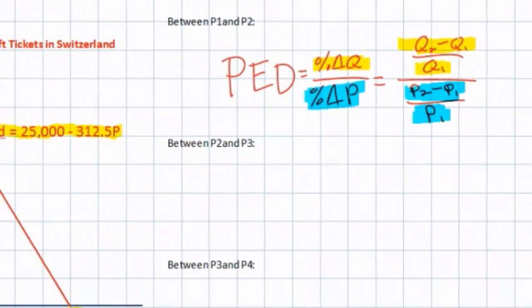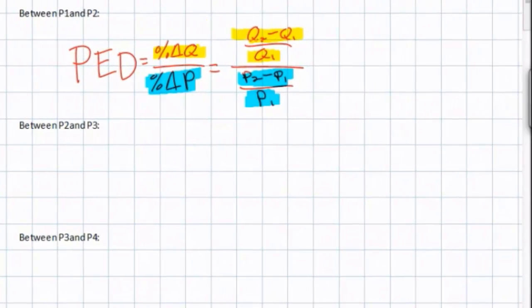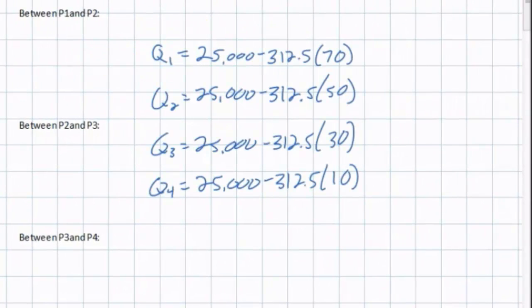Looking at our graph, we've identified four prices: 70 francs, 50 francs, 30 francs, and 10 francs. Before we can calculate PED, the first thing we have to do is determine the quantities that correspond with each of these prices. To do that, we'll use our demand equation and plug the four different prices into it to derive Q1, Q2, Q3, and Q4. Here we've plugged the four different prices into our demand equation and we'll solve for the quantity demanded at each price.